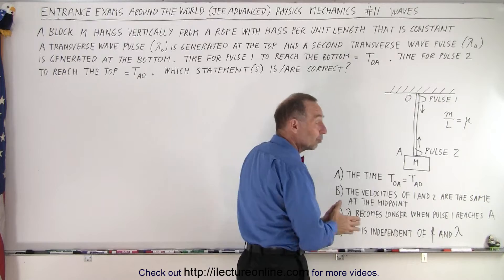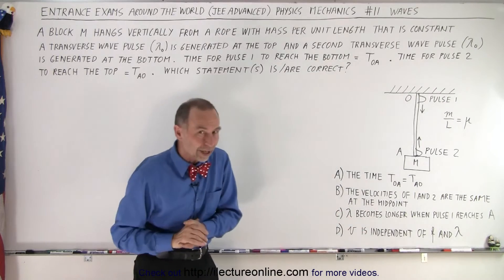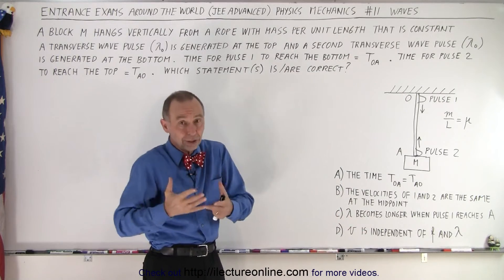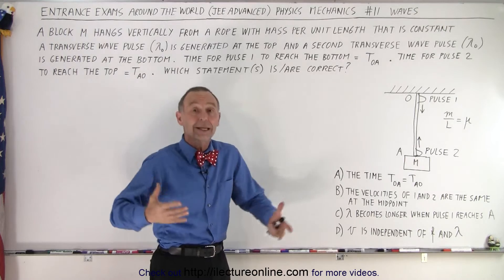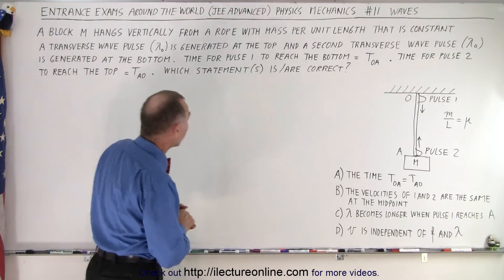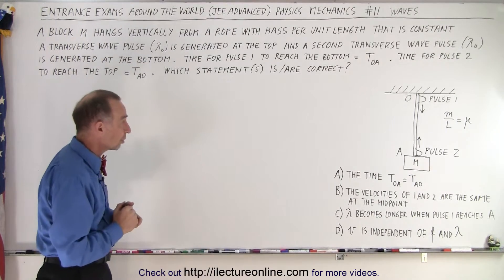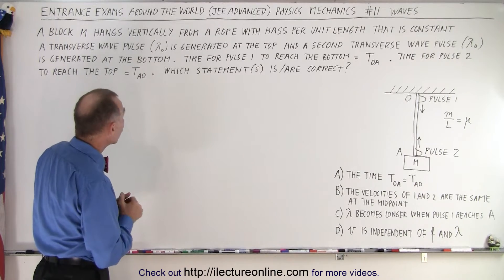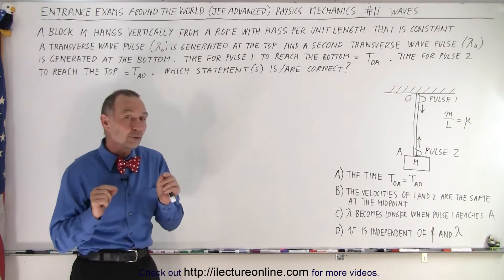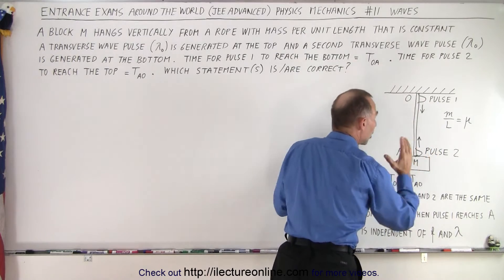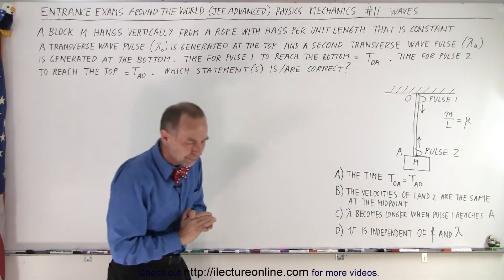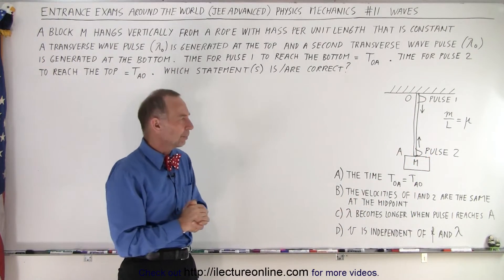Here are four statements. We have to determine which of those four statements are correct—could be one, could be all four, maybe could be none. We're not told, we're supposed to figure out which are correct. Notice that the wavelength of the two pulses generated for pulse one and pulse two, they are indeed the same. So how do we solve this problem?